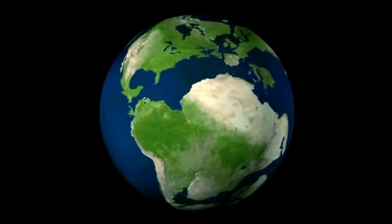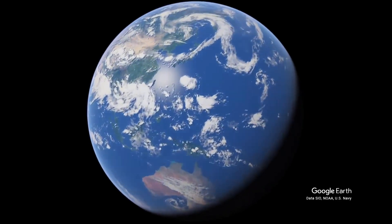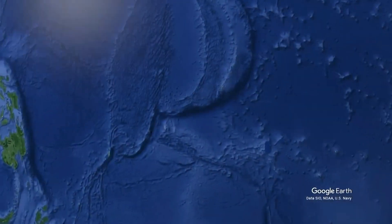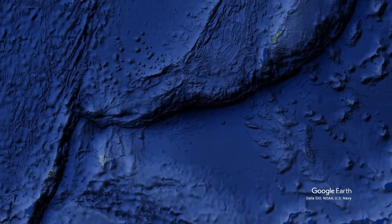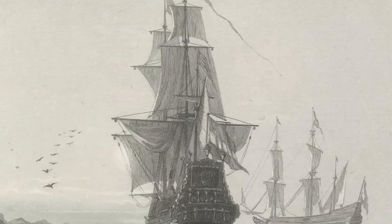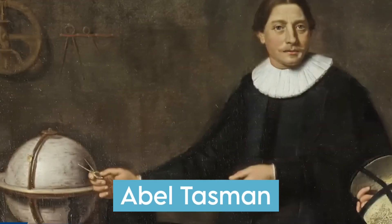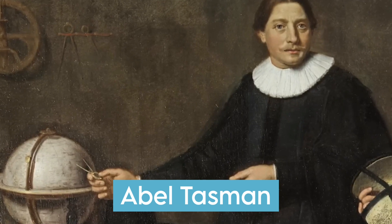Europeans had an unwavering belief that there must be a sizable landmass there, which they preemptively named Terra Australis, to balance out their continent in the north. Their fixation had existed since the time of the ancient Romans, but Abel Tasman was on a mission in 1642.